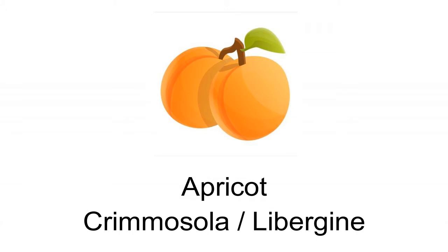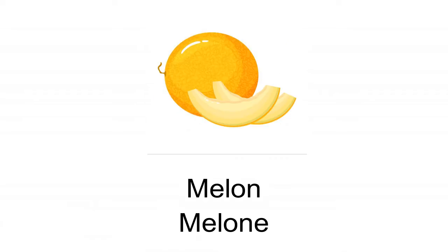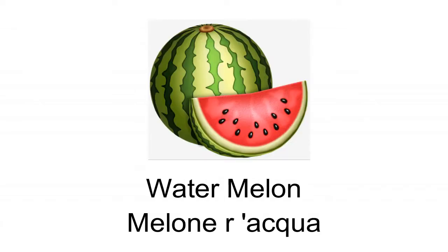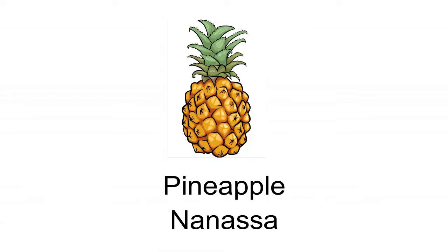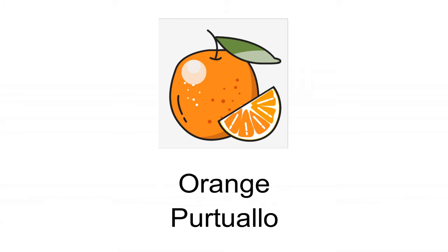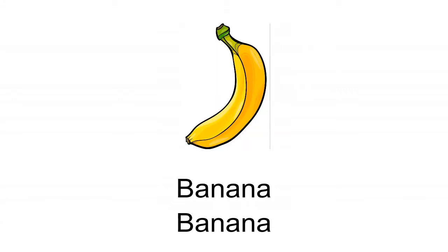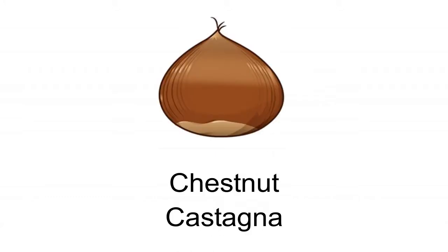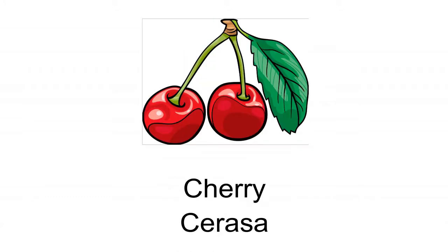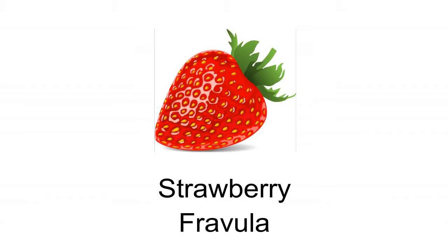Fruits vocabulary: Apricot — Cresommola. Melon — Melone. Watermelon — Melonara. Pineapple — Ananas. Orange — Portogallo. Banana — Banana. Chestnut — Castagna. Cherry — Cerasa. Strawberry — Fragola.